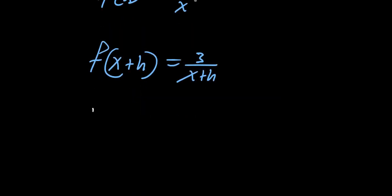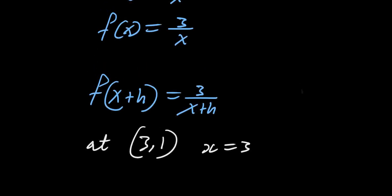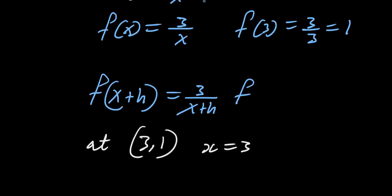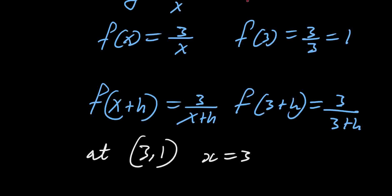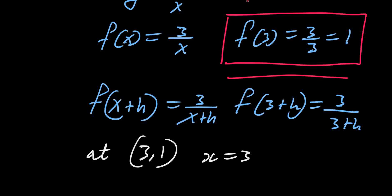At point 3 and 1, x equals 3. So we can plug this value into f(x). f(x) automatically becomes f(3) equals 3 over 3, which equals 1. And f(3+h) equals 3 over 3 plus h. So now we can plug these values into the slope formula.